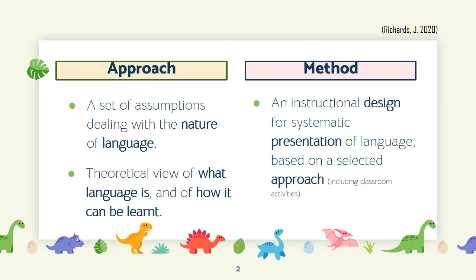First, it is necessary to mention some of the main differences between approach and method. Approach is a set of assumptions dealing with the nature of language — a theoretical view of what language is and how it can be learned. On the other side, method is an instructional design for systematic presentation of language based on a selected approach, including some classroom activities.